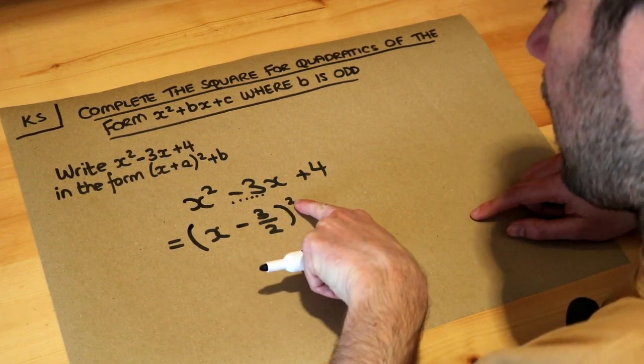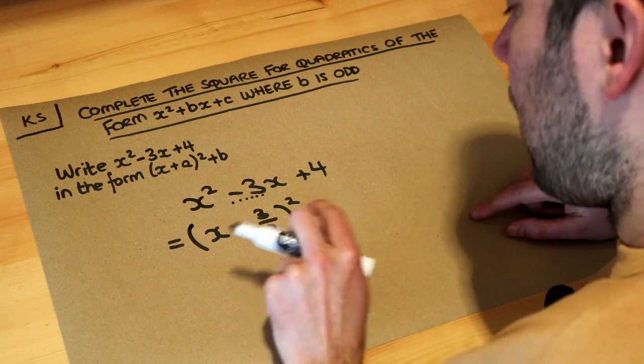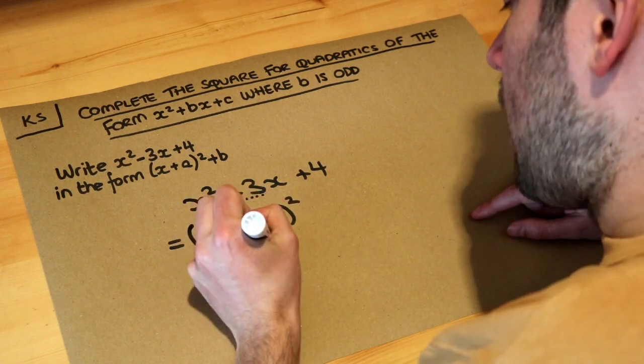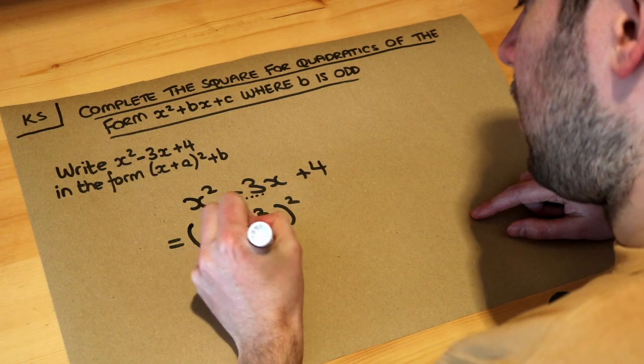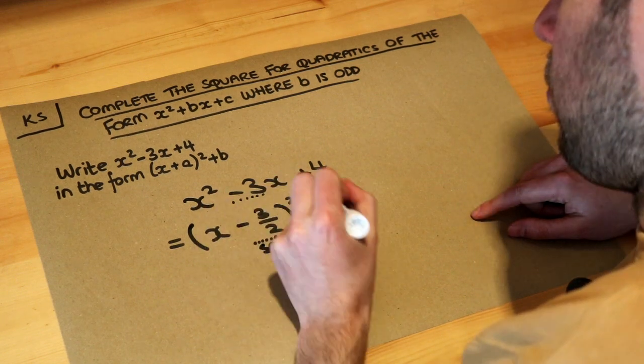We close the bracket and have the squared, and then we take whatever this is, we square it and throw it away. So you need to square that and then throw it away, so you subtract it.